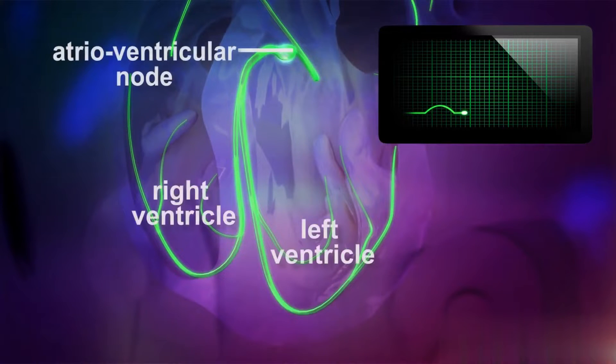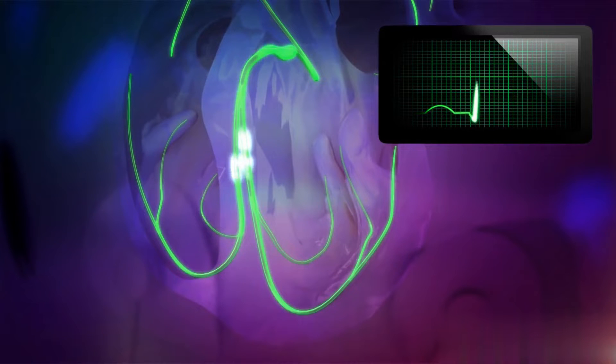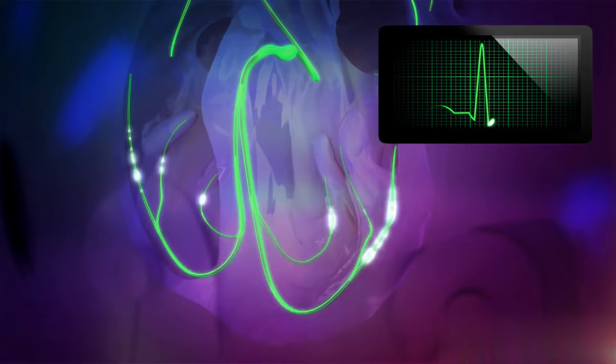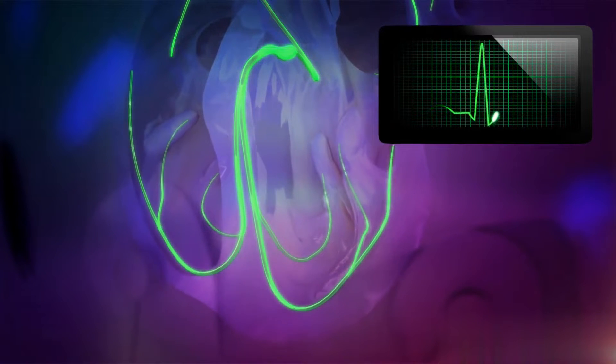Atrial fibrillation is a type of abnormal heartbeat caused by erratic electrical signals originating from the atria.